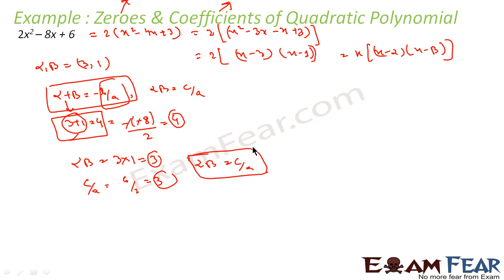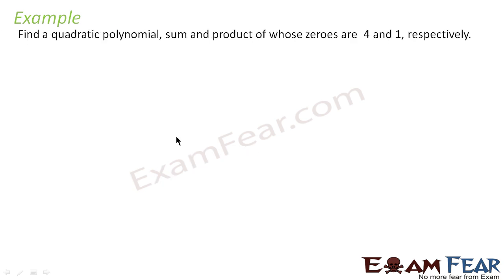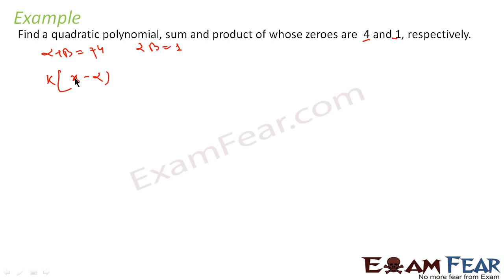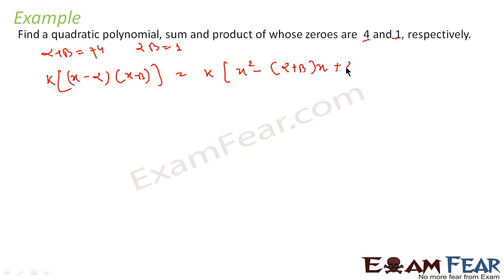α + β = −B/A and α·β = C/A. Now we will take one more example: we have to find the quadratic polynomial whose sum of zeros is 4 and product of zeros is 1. That is, we are told α + β = 4 and α·β = 1.